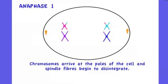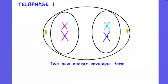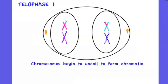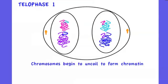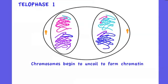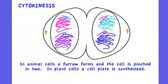In telophase 1, new nuclear envelopes form around the chromosomes at either end of the cell, and those chromosomes unravel to form chromatin. The first division, meiosis 1, is then completed, and cytokinesis follows by dividing the cytoplasm to form two separate cells.